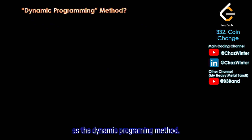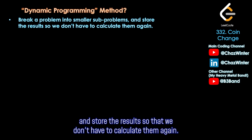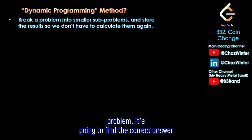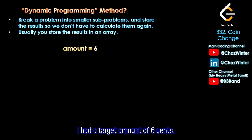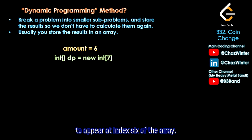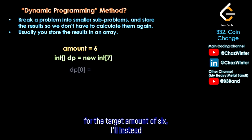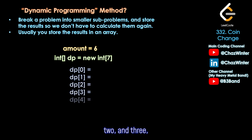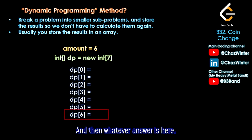We're going to use dynamic programming, sometimes abbreviated as DP. The DP method says to break the problem into smaller subproblems and store the results so we don't have to calculate them again. For a target of six cents, I create an array of size seven so the amount six appears at index six. Instead of immediately solving for six, I'll solve for zero first, then one, then two, three, four, five, until I reach six.